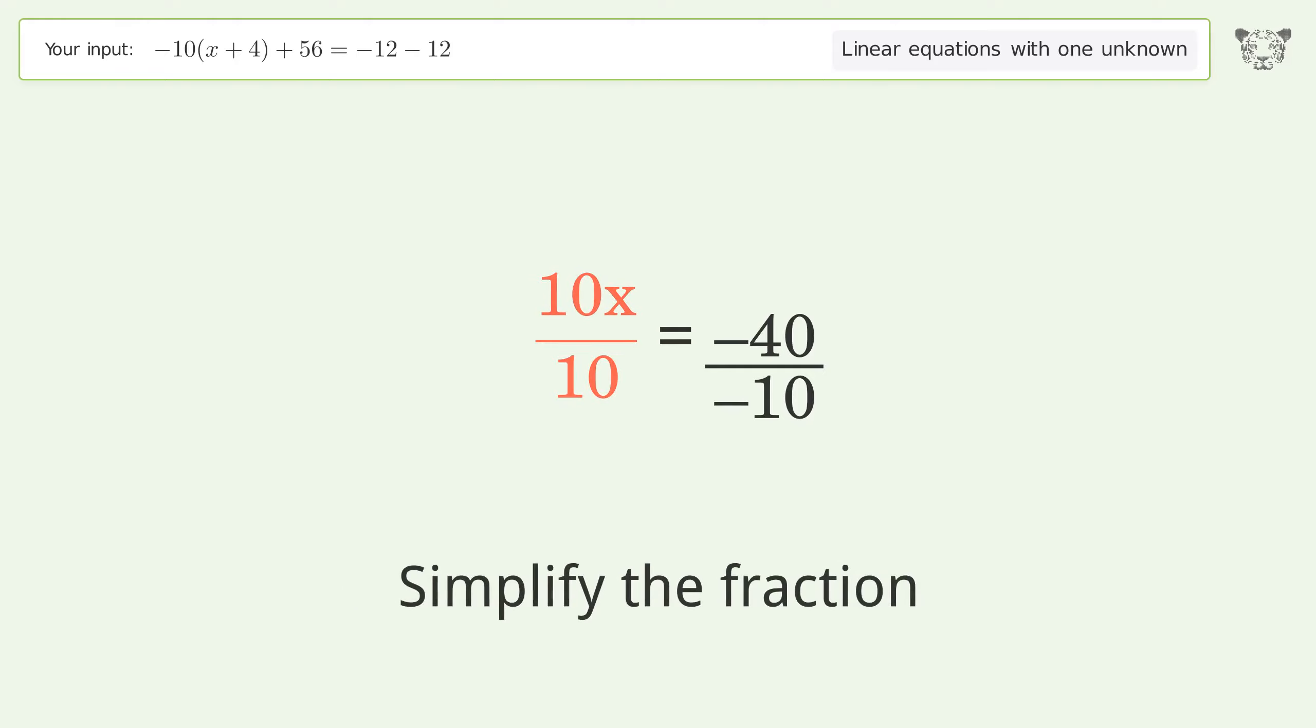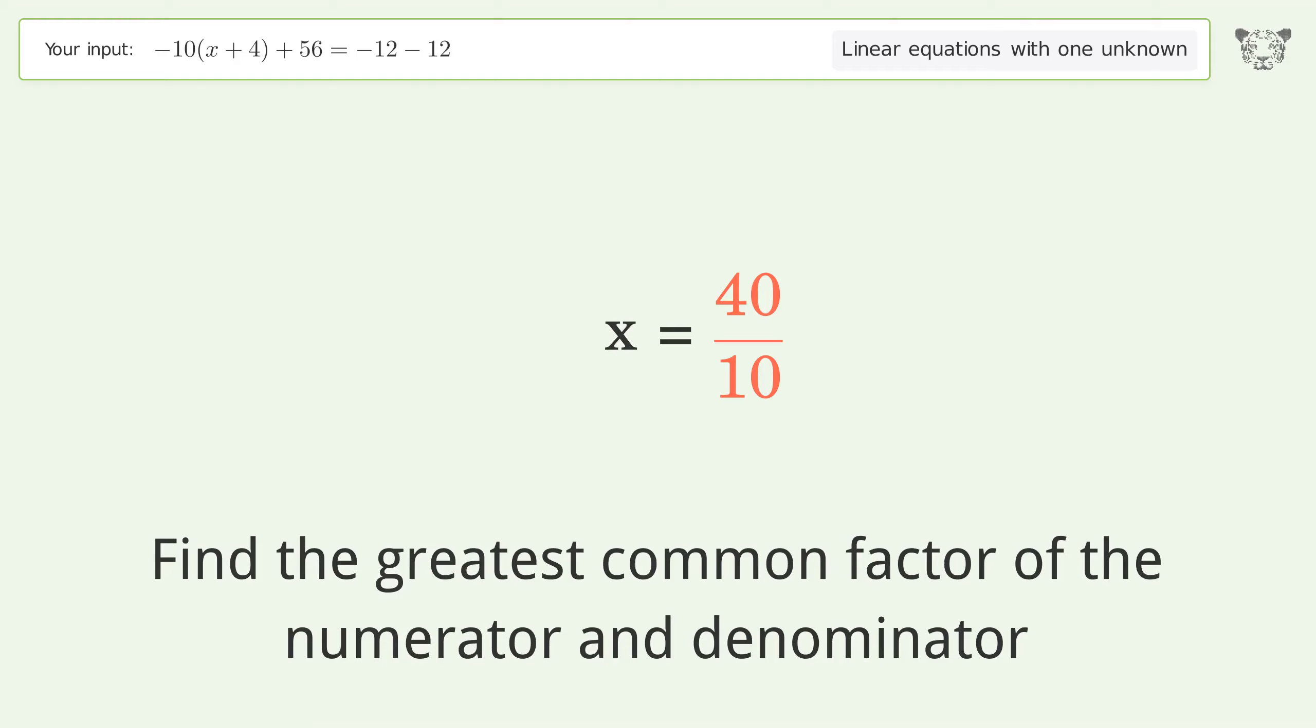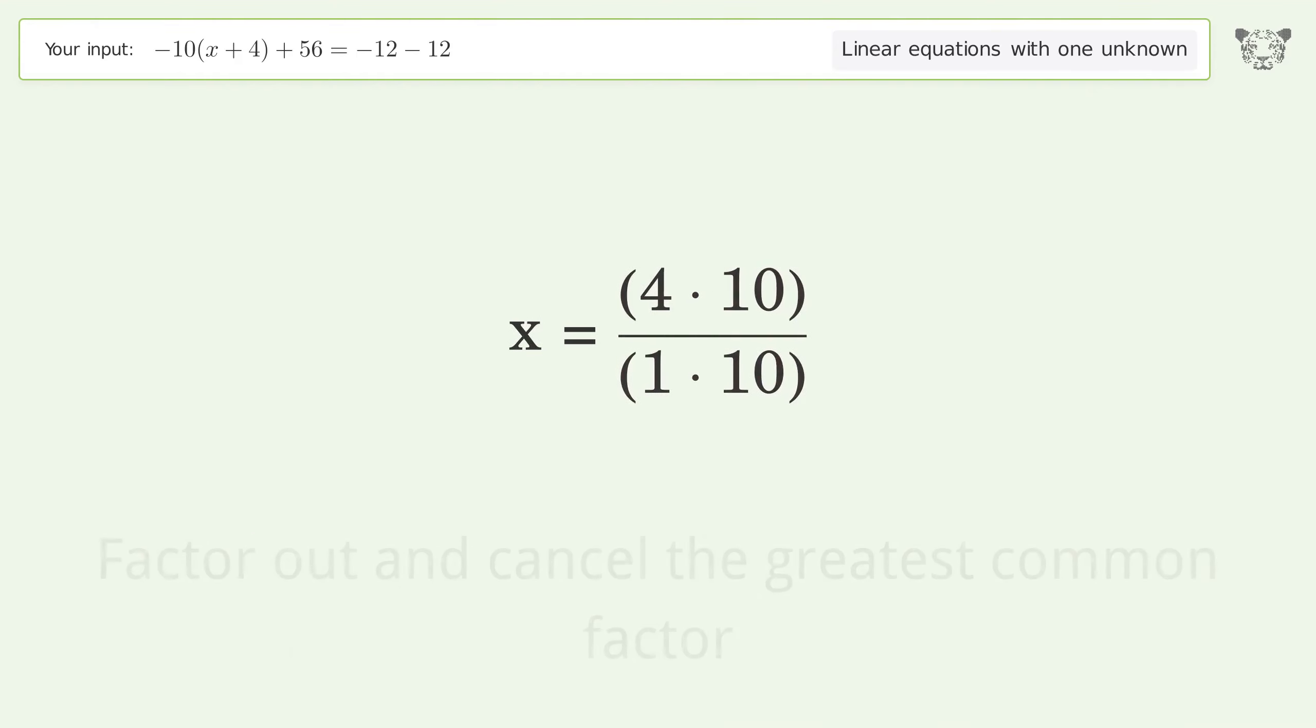Simplify the fraction. Cancel out the negatives. Find the greatest common factor of the numerator and denominator. Factor out and cancel the greatest common factor.